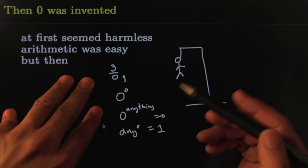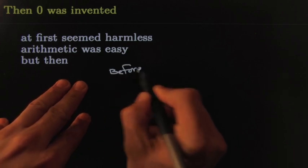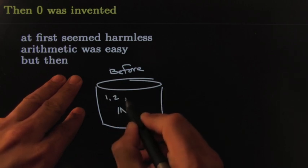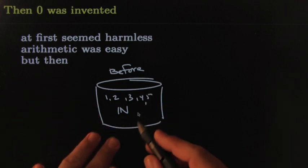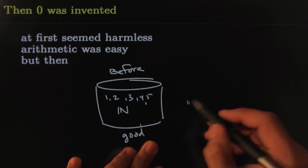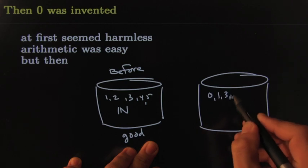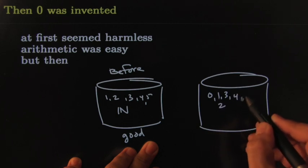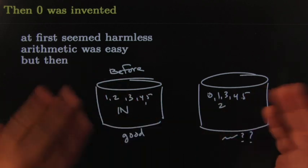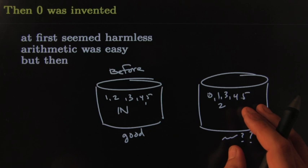This innocent-looking number zero — as soon as you introduced it, everything changed. Before, the playground where people played had only natural numbers: one, two, three, four, five — all these numbers were harmless and nice, everything was good. Then that container got bigger when they added zero, and all of a sudden a lot of things were unanswered. These numbers are easy, these numbers are for little kids.